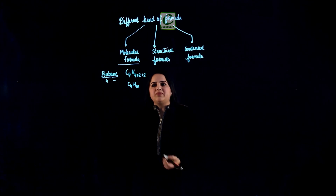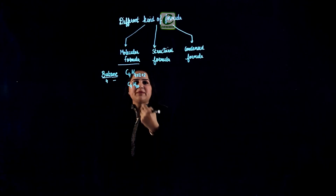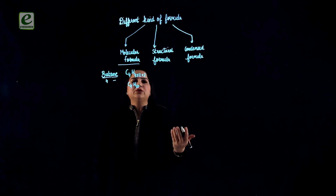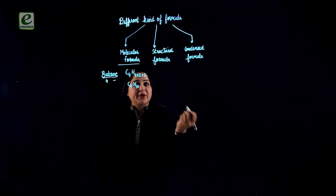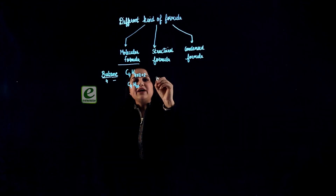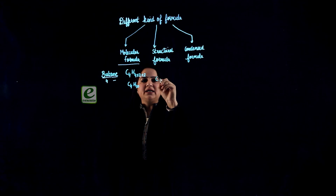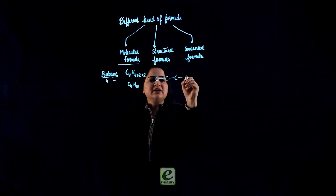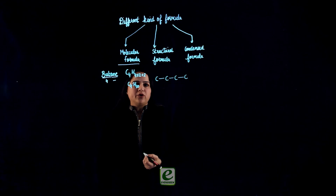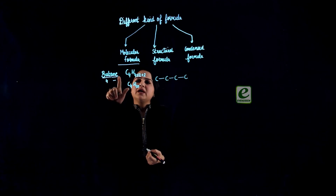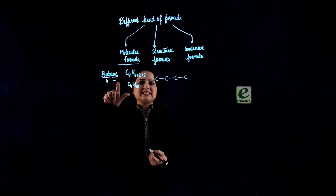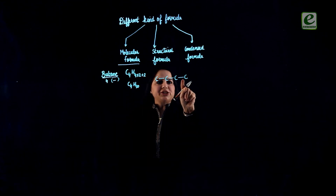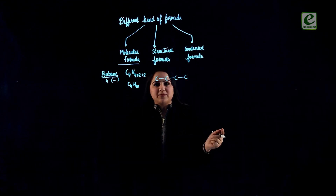If we talk about structural formula and we take the same compound butane, it indicates how the carbon and hydrogen atoms are present in the compound. Butane contains 4 carbons, so the first step is writing down the 4 carbon atoms. 'Ane' indicates that it has single bonds.